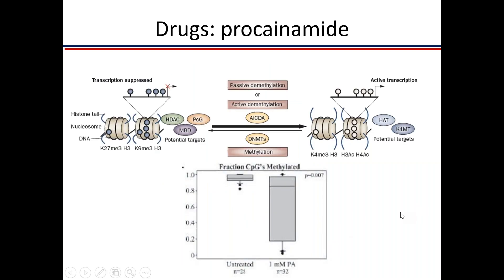Drug-induced autoimmunity is another mechanism. Procainamide, for example, can induce lupus by causing DNA demethylation. Demethylated DNA is active DNA, leading to increased transcription and protein production, which activates T cells and B cells more strongly because procainamide leads to demethylation.